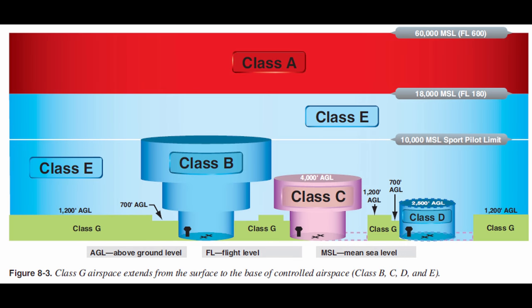Starting with Delta: Class Delta airspace is pretty common for smaller airports and also common for many military airports. With a Delta, you're going to receive VFR services unless you're on an IFR flight plan. The Delta controller is not responsible for separating VFR aircraft. The only requirement to enter the airspace is having two-way radio communications.